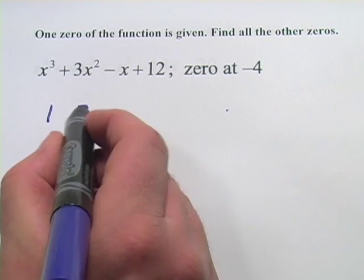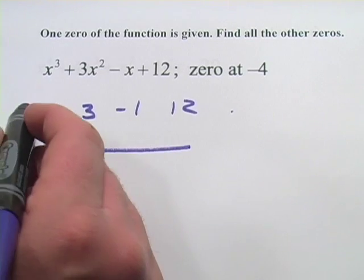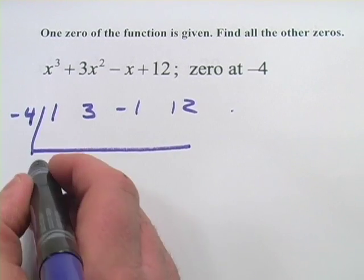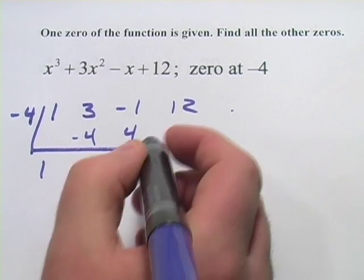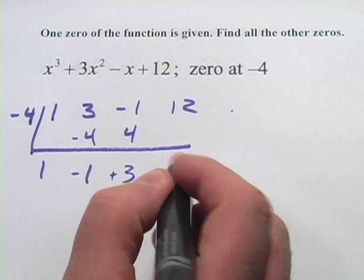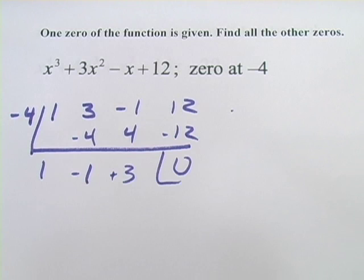I'll set this up for synthetic division. And we're going to divide by negative 4. Let's see. So negative 4, that's negative 1, that's positive 3, and that would be negative 12 and the remainder of 0. Great.